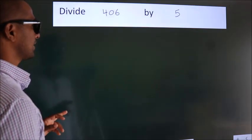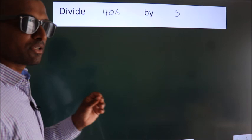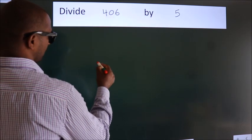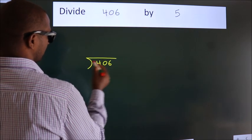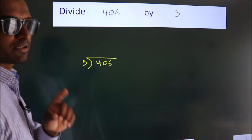Divide 406 by 5. To do this division, we should frame it in this way. 406 here, 5 here. This is your step 1.